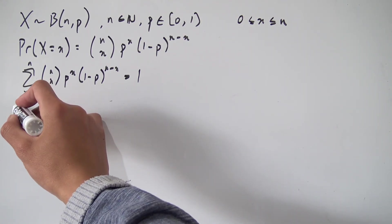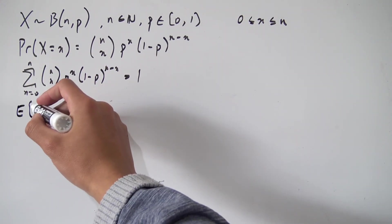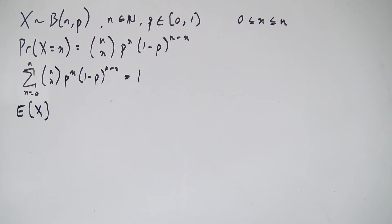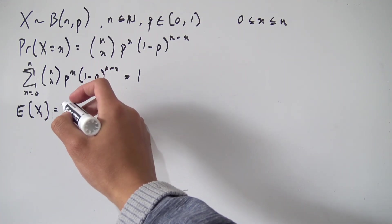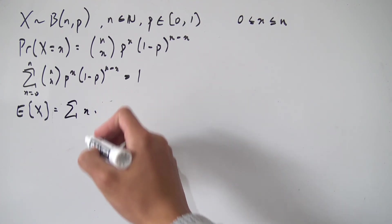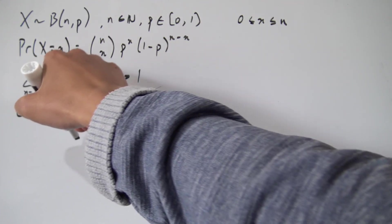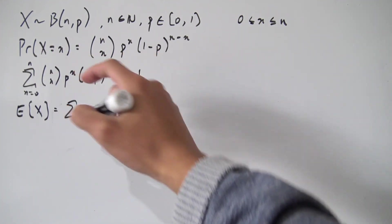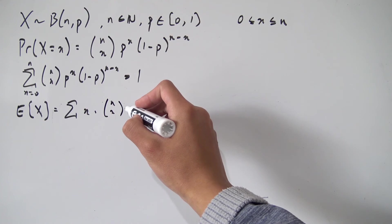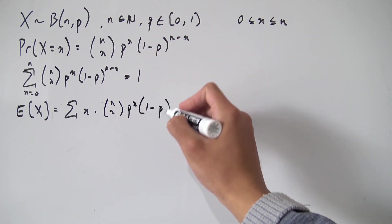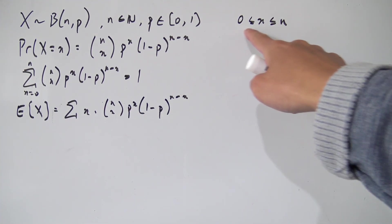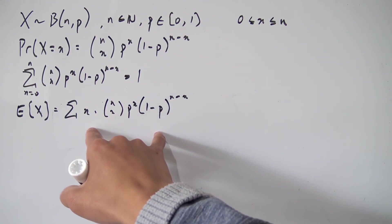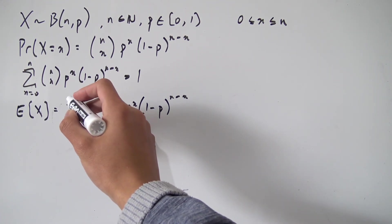Now with all that out of the way, we can go on and find the expected value of our random variable X, which is a discrete random variable. We use the definition of the expected value of a discrete random variable: it's the sum of X times the probability that our random variable equals that value X, which is N choose X times P to the X times 1 minus P to the N minus X, with X going from 0 to N.